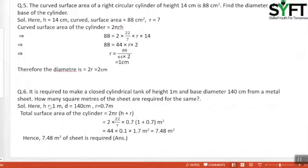Another example. It is required to make a closed cylindrical tank of height 1 meter and base diameter 140 cm from a metal sheet. How many square meters of sheet are required for the same? We have to convert to meters first. Here, H equals 1 meter, D equals 140 cm, so R equals 0.7 meter.